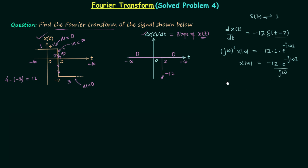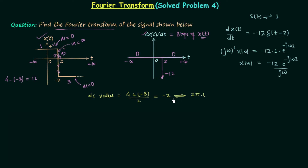But this is not the final result because we have not calculated the Fourier transform of the DC value. After differentiation of this signal the DC value becomes 0, so in the differentiated signal the DC value is 0 and its Fourier transform is 0. But the original signal may have some non-zero DC value, and its Fourier transform we need to include with the final Fourier transform. So let's calculate the DC value of the original signal XT. The DC value is equal to (4 + (−8)) divided by 2, which is equal to minus 2. And we know minus 2 will have the Fourier transform equal to 2π times (minus 2) times delta(omega), and after solving this we get minus 4π·delta(omega).